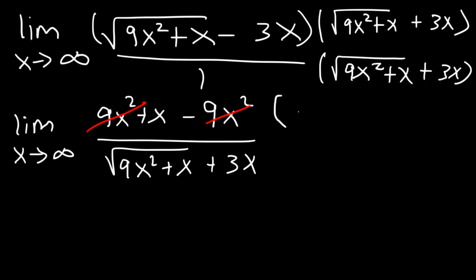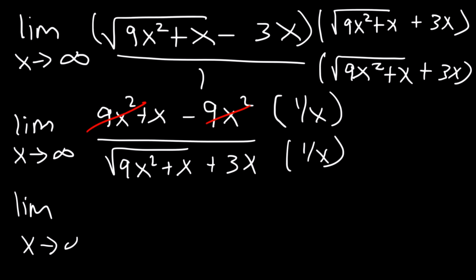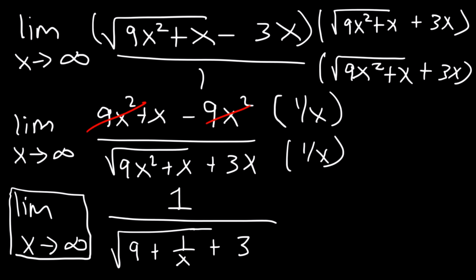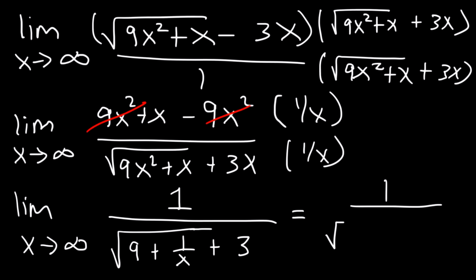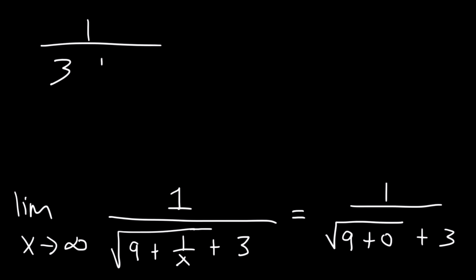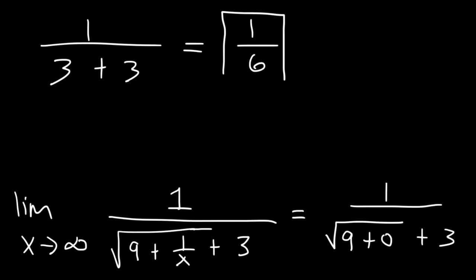Based on what remains, we multiply the top and the bottom by 1 over x. So this is the limit as x approaches infinity: x times 1 over x is 1. Inside the radical we multiply by 1 over x squared: 9x squared times 1 over x squared is 9, x times 1 over x squared is 1 over x, and 3x times 1 over x is 3. Now we apply the limit to 1 over x: the limit as x approaches infinity of 1 over x is 0. So this is 1 divided by the square root of 9 plus 0 plus 3. The square root of 9 is 3, and 3 plus 3 is 6. So the final answer is 1 over 6.